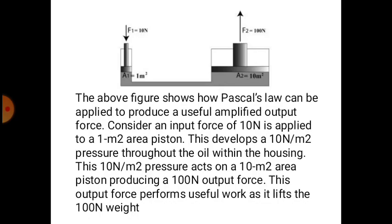One application of Pascal's law is the hydraulic jack. The figure shows how Pascal's law can be applied to produce a useful amplified output force. Consider an input force of 10 newtons applied to a 1 square meter area piston — this develops 10 newtons per square meter of pressure throughout the oil. This pressure acts on a 10 square meter area piston, producing 100 newtons of output force, which lifts a 100-newton weight. This gives us mechanical advantage — the input is less and the output we get is more.